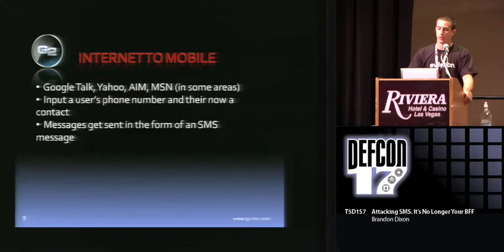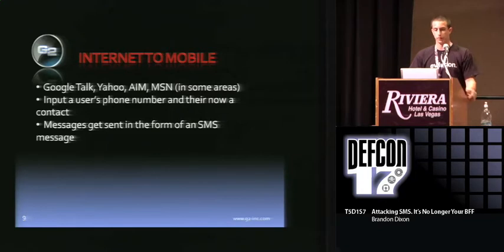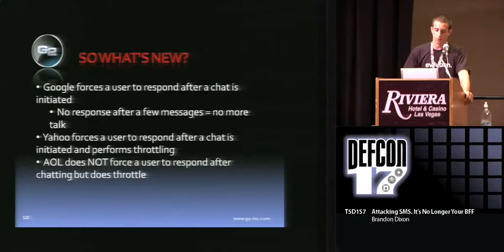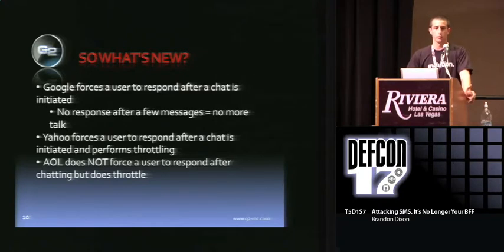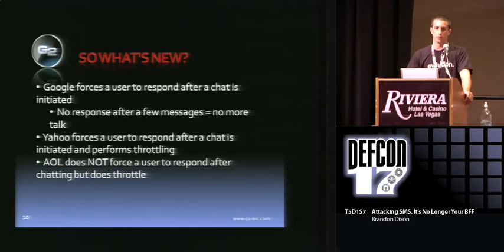Right now there's internet-to-mobile communications via Google Talk, Yahoo, AIM, and MSN in some areas. You can input a user's phone number, and they're now considered a contact within your list. You can send a message to them and it's going to make it to their phone as an SMS. Google forces a user to respond after a chat's initiated — if there's no response after a few messages, you have no more talk with that person. Yahoo also forces a user to respond after a chat is initiated and performs some throttling. AOL, on the other hand, does not force a user to respond back once a chat is initiated, though they do some throttling, which is easily bypassed.